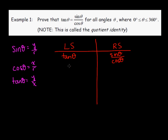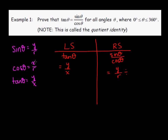We want to do something with each side separately so that we end up with the same value on each side. Tangent theta, based on our ratios, we know is y over x. We can also replace sine theta and cosine theta with the corresponding x, y, r ratios. Sine theta is y over r, and that's being divided by cosine theta, which is x over r.